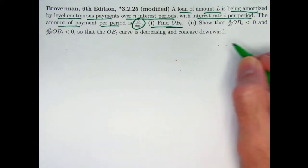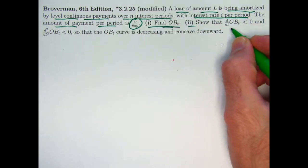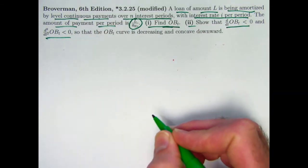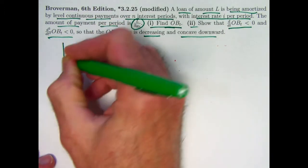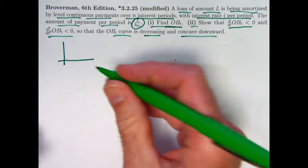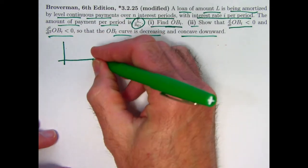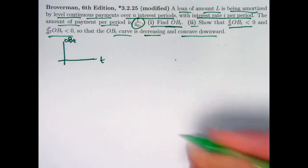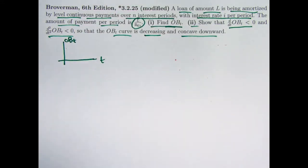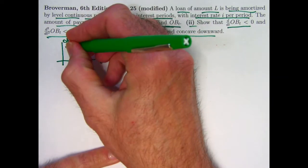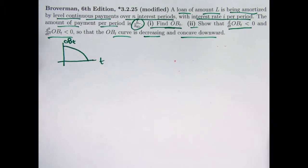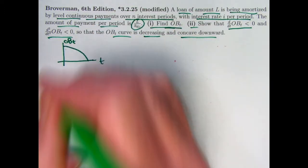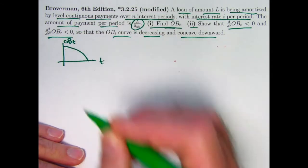There are two main things to do: one, find a formula for the outstanding balance as a function of time; and two, use calculus to calculate the derivatives and show they are negative — illustrating that the graph is both decreasing and concave down. This illustrates a general fact: whether you're in the continuous or discrete case, the balance goes down and has a concave-down shape, meaning more and more of your payment goes toward principal as time goes on and less and less toward interest.